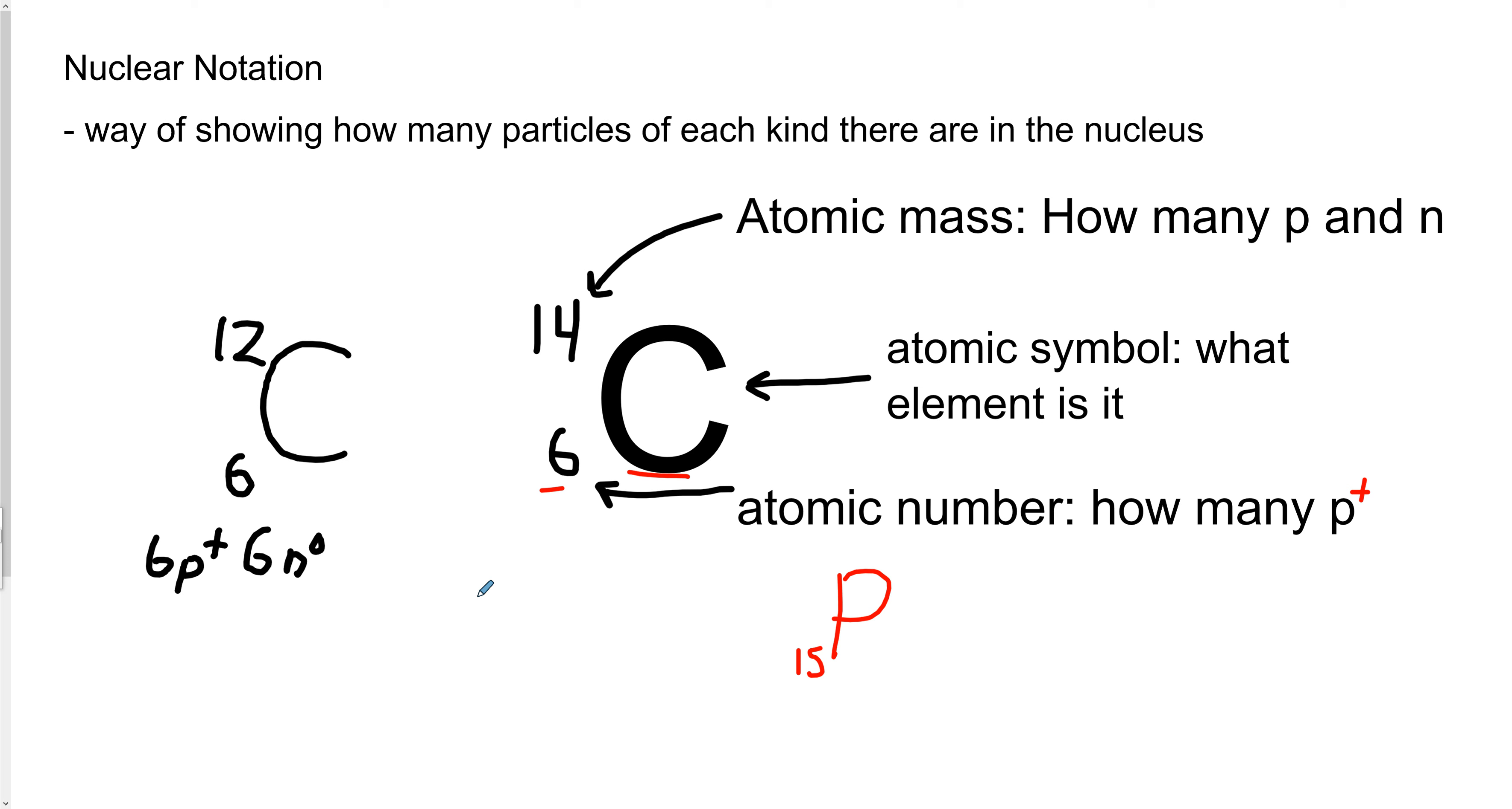In this guy over here, since it's carbon-14, we still have 6 protons. If that wasn't the case, remember, it would not be carbon anymore. But we've got 14 total nuclear particles. In other words, there's 14 things in the nucleus. So all we need to do in order to find out how many neutrons this one has is 14 minus 6. That means that we have 8 neutrons in this atom.